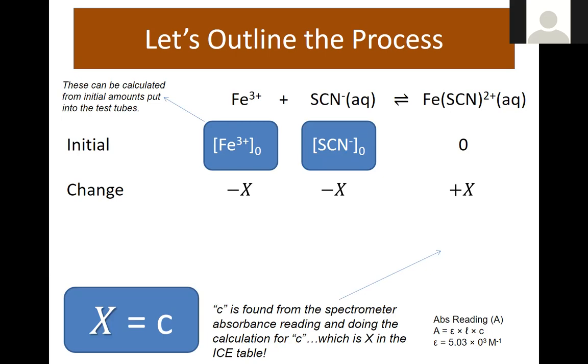This reaction is going to proceed to the right. So we're going to minus, minus our two reactants and gain some products in the ratio of one to one to one. And then we can calculate the equilibrium concentrations if we knew what x is. And we do, because we got that from the absorbance experiment. And so that's where we're going to say that concentration is equal to x that we found.